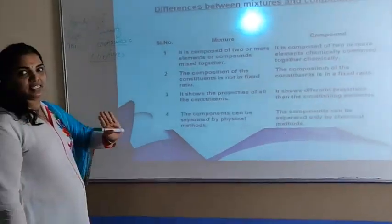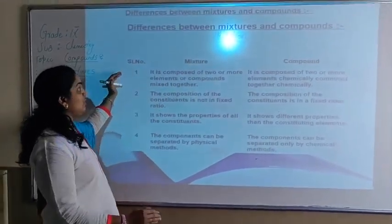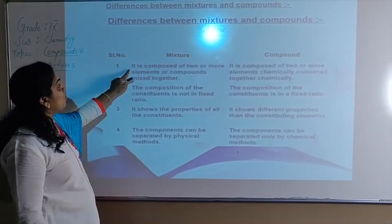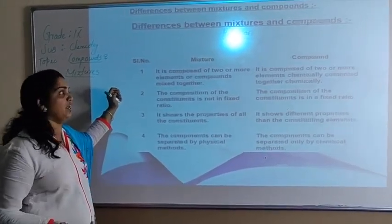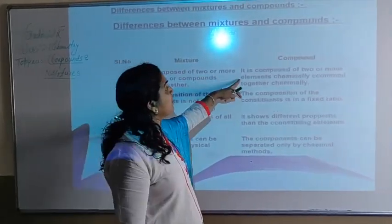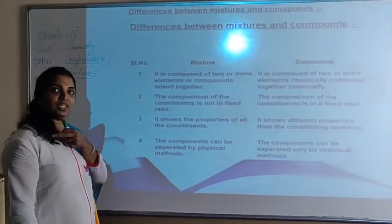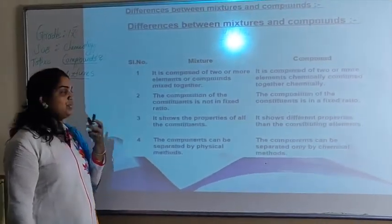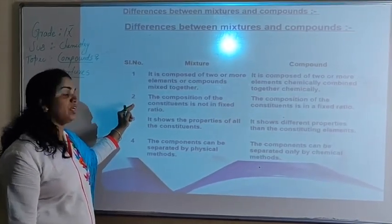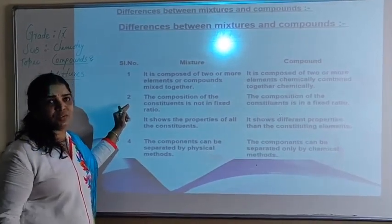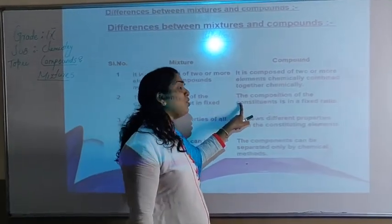Let us discuss the differences between a mixture and a compound. A mixture is composed of two or more elements or compounds physically mixed together. A compound is made up of two or more elements chemically combined in a fixed ratio. The composition of a mixture's constituents is not in a fixed ratio — there is no fixed volume or fixed mass of the substances being mixed.